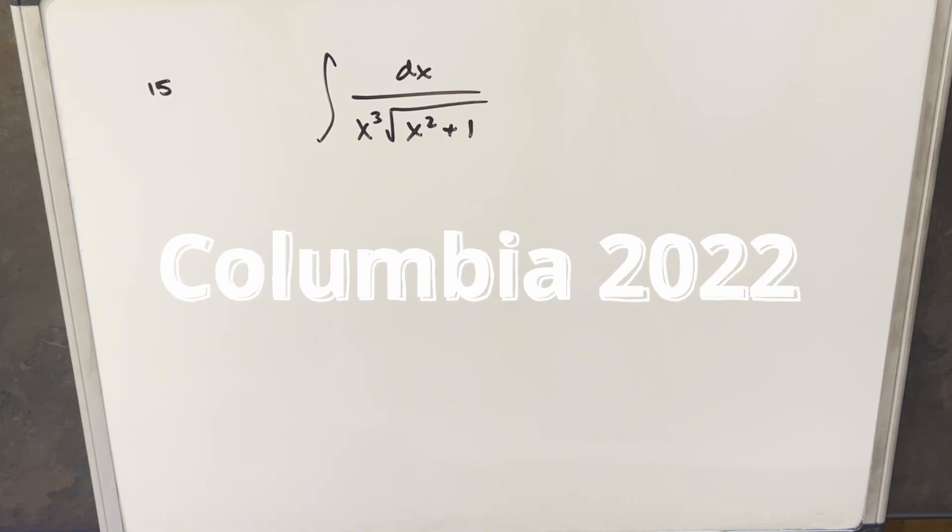Okay, we have here today a pretty interesting looking integral from the Columbia integration bee 2022. This one was problem 15. We have the integral of 1 over x cubed square root of x squared plus 1 dx. I actually thought this was one of the hardest ones on this integration bee and pretty interesting. I wasn't able to come up with anything really creative. I kind of just did the straightforward thing, which was a trig substitution.